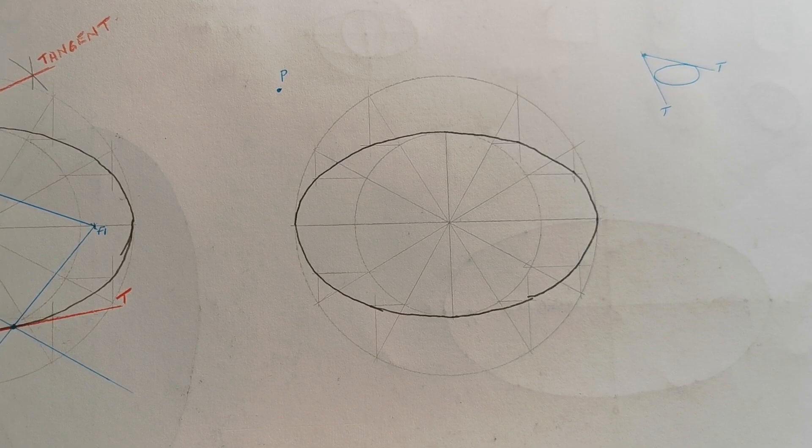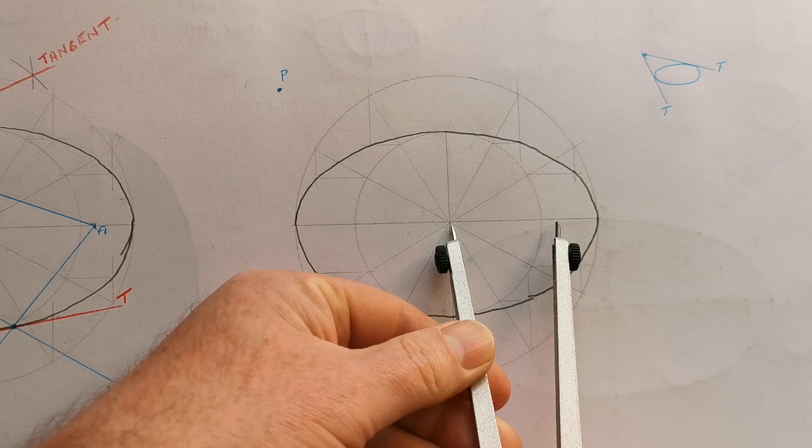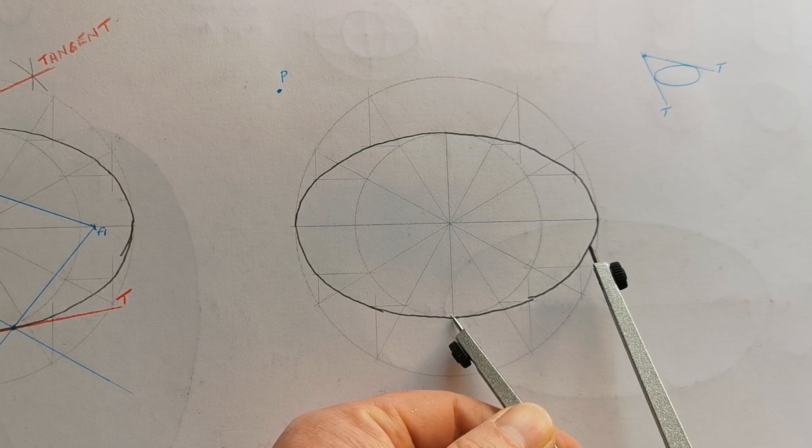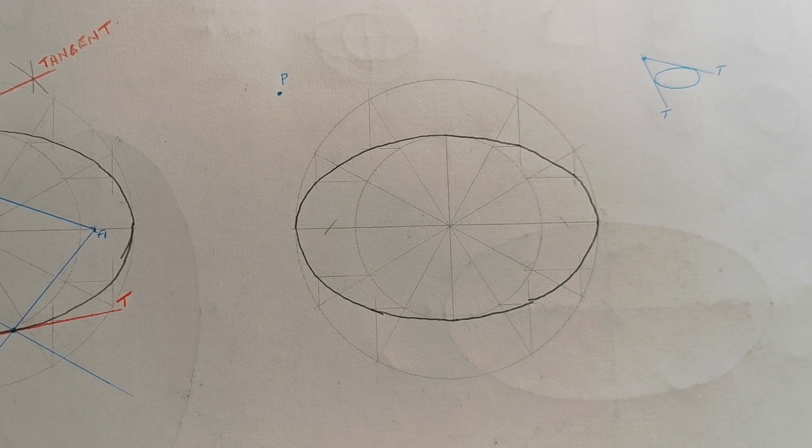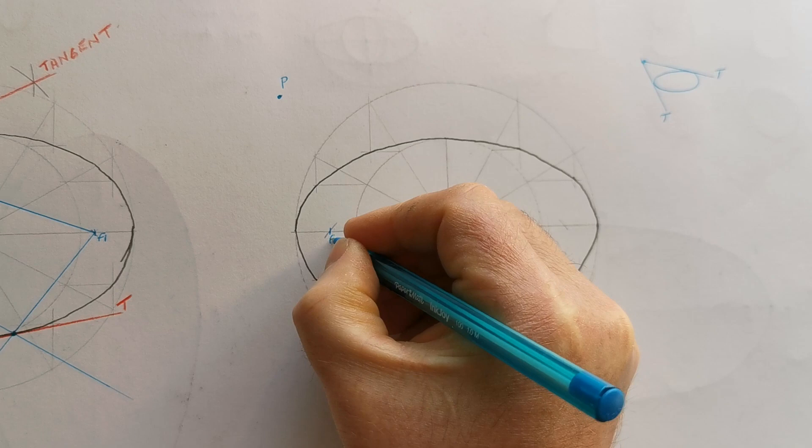Now the steps for this: same as the last time, you want to find the focal points. Half the major from the end of the minor gives us the focal points, so just mark F and F1.